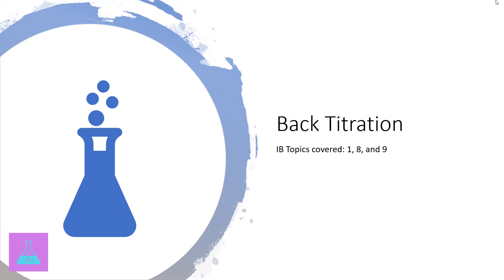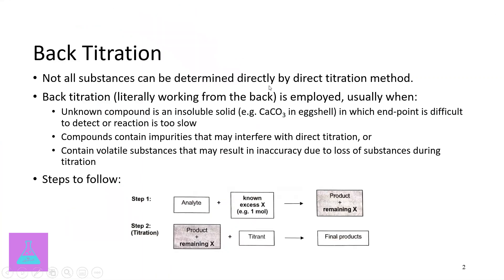For back titration, the key thing to understand is that it comes about because not all substances can be determined directly by a direct titration method. You can't just react everything in one step and expect to know the content of your analyte. Sometimes you have unknown compounds that are insoluble — they can't dissolve in water, so you can't analyze them as an aqueous solution and cannot determine the endpoint by direct titration.